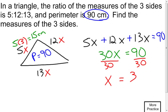I'm going to take 12 times my x value, and that's going to come out to be 36 centimeters for the middle side length. And then last but not least, I'm going to take 13 times 3, and find out that that one equals 39 centimeters.